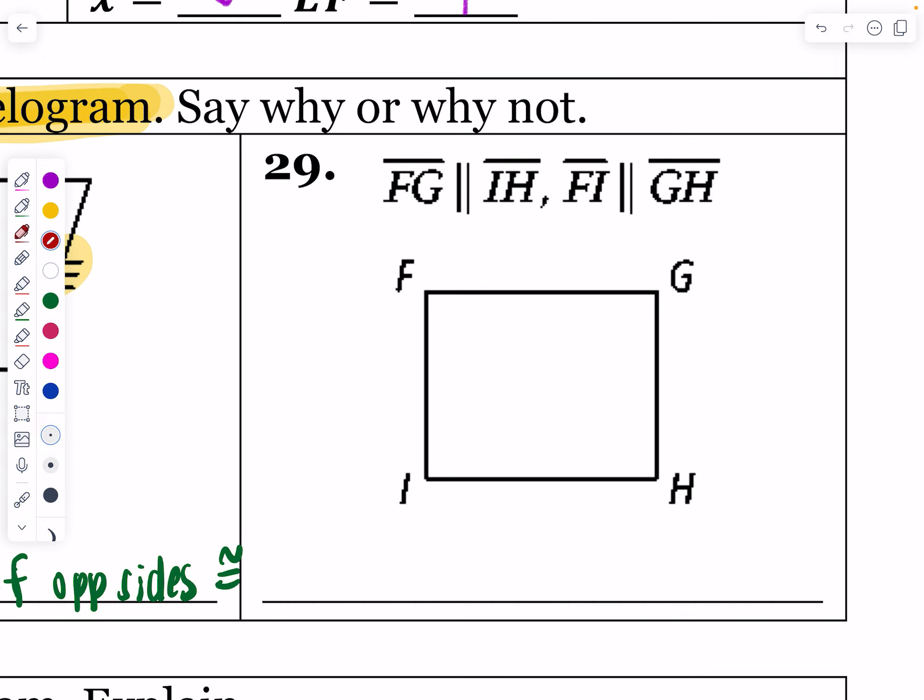This next picture, they say FG is not congruent to IH, but FG is parallel to IH, and FI is parallel to GH. So I'm going to mark that. That was written at the top so I can put it in the picture. Is this a yes or a no?